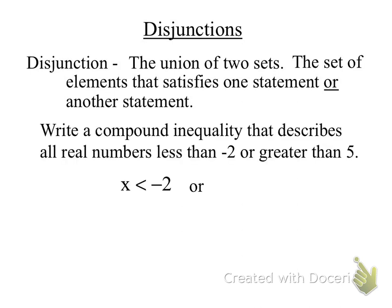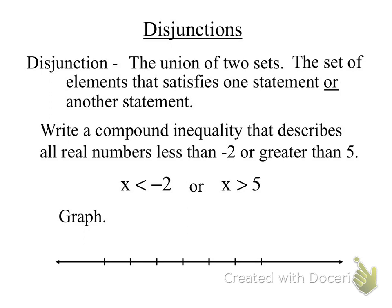When graphing a disjunction, for example all real numbers less than negative 2 or greater than 5, I have to write it with two inequalities. The 'or' statements must be written with two inequalities — there's no shortcut. On the number line you'll see they go in different directions: x is less than negative 2 is an open circle going left, and x is greater than 5 is an open circle going right.